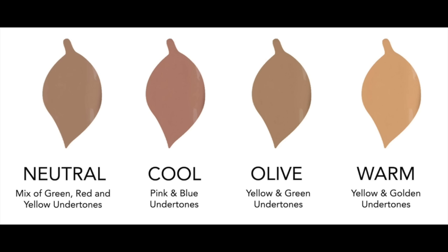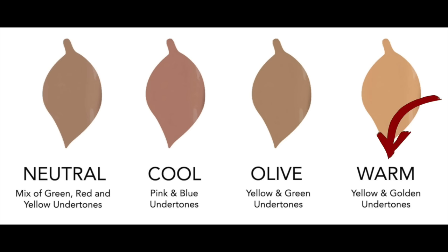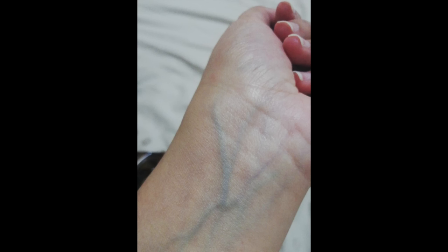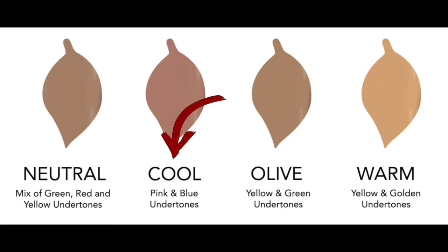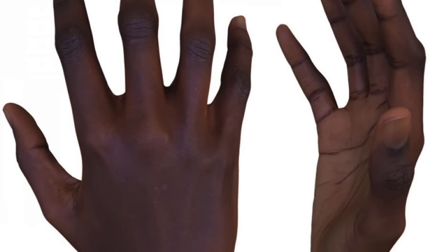Don't let the pictures fool you. The next step is choosing the right undertone within that category. There are usually three easy ways to find your undertone. First, look at the color of your veins on your wrist. If your veins are green or olive, you have a warm undertone. If they're bluish or purplish, you have a cool undertone. If your veins don't have a clear color, it may be because your skin is rich in melanin.